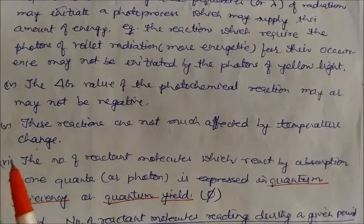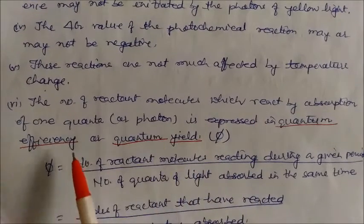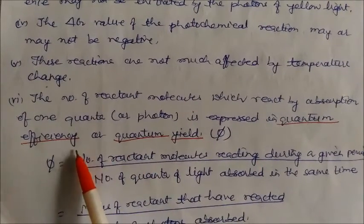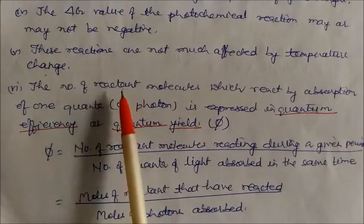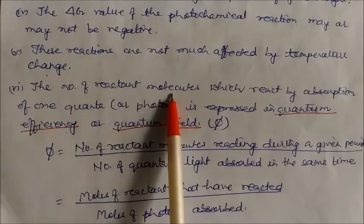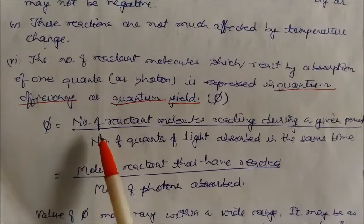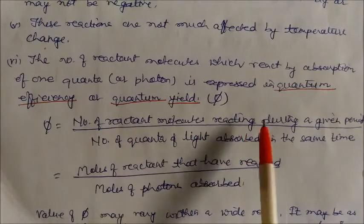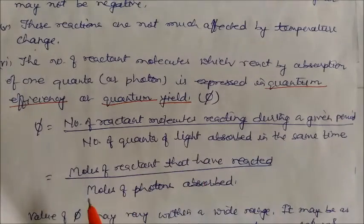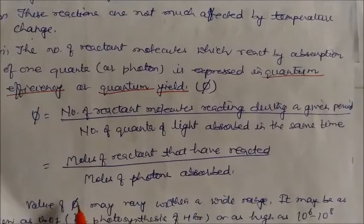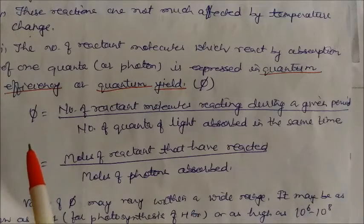Photochemical reactions are not much affected by temperature change — they are temperature independent. The number of reactant molecules which react by absorption of one quantum is expressed as quantum efficiency or quantum yield. Quantum yield equals the number of reactant molecules reacting during a given period divided by the number of quanta of light absorbed in the same time.